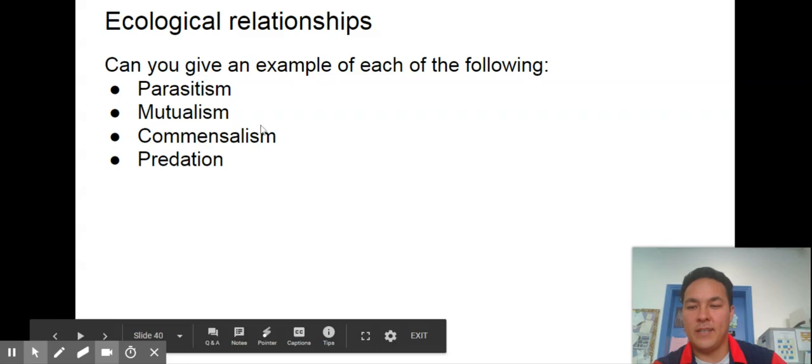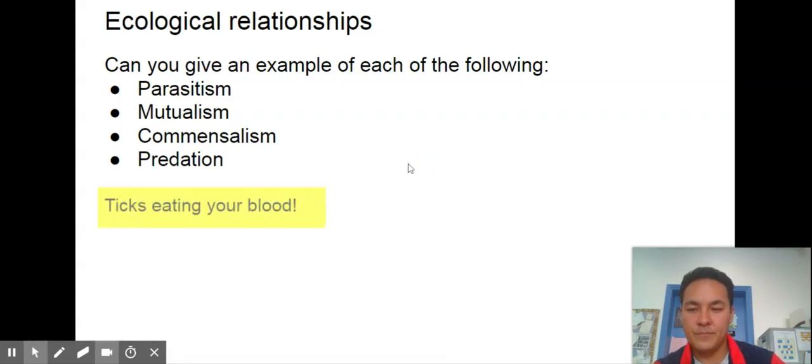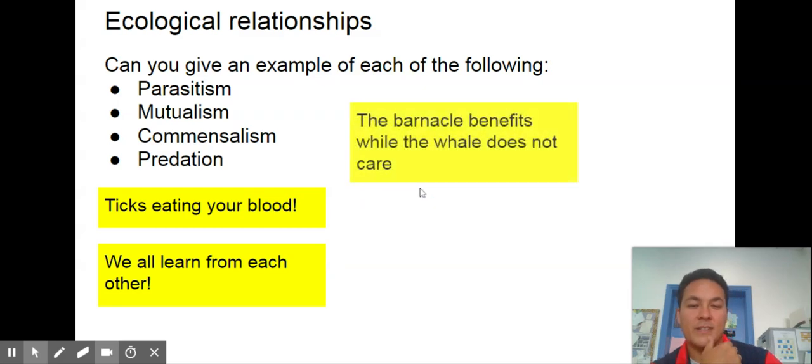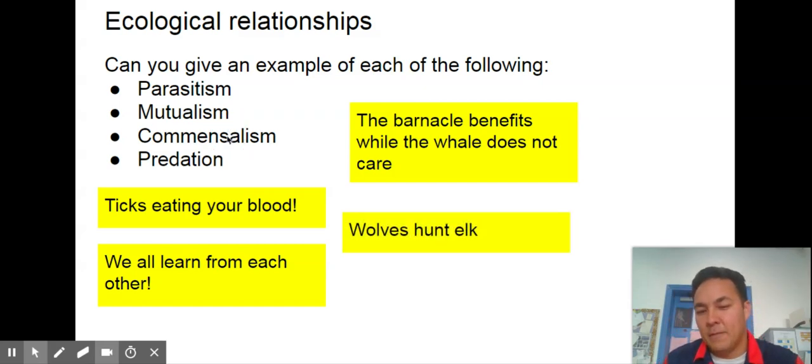Can we give an example of each of these ecological relationships? Parasite, like ticks eating your blood. Mutualism, we all learn from each other. Commensalism is the one we see least in nature. The barnacle benefits while the whale does not care. Predation would be like wolves hunting elk. You looked at this through the Canadian lynx going after the snowshoe hare and the boom and bust cycles of their predator-prey relationship.